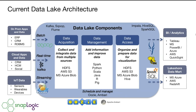Once you've landed the data, you need to move it between different file formats. You might land it on HDFS, put a Hive layer on top, move it into HBase, and between those zones convert from Avro to Parquet to Sequence Files. Once you have that data, you'll need to do data prep and processing — and choosing the right engine adds yet another layer of complexity — before reaching the data access layer.